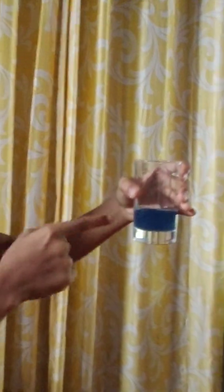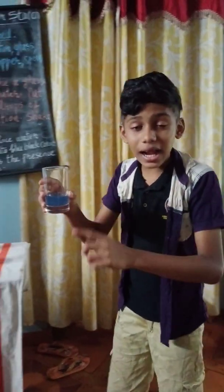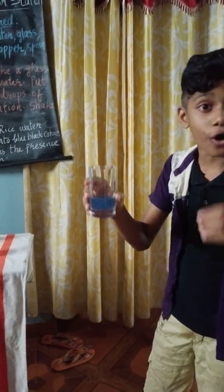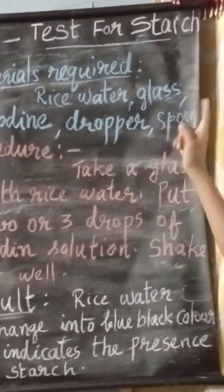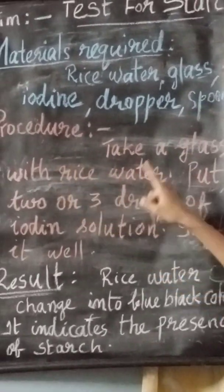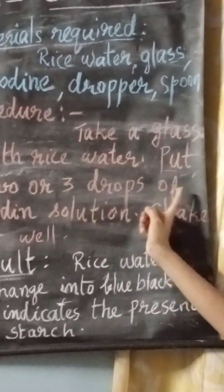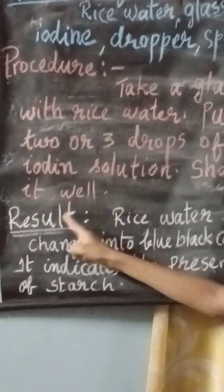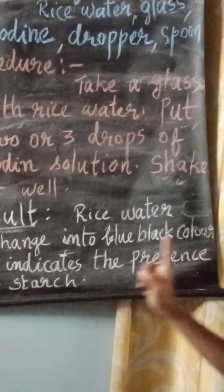You can see the color change into blue-black color. The blue-black color indicates the presence of starch. Once again I am repeating — the test for starch: materials required are rice water, glass, iodine, dropper, and spoon. Take a glass with rice water, put two or three drops of iodine solution, shake it well. Result: rice water changes into blue-black color, which indicates the presence of starch.